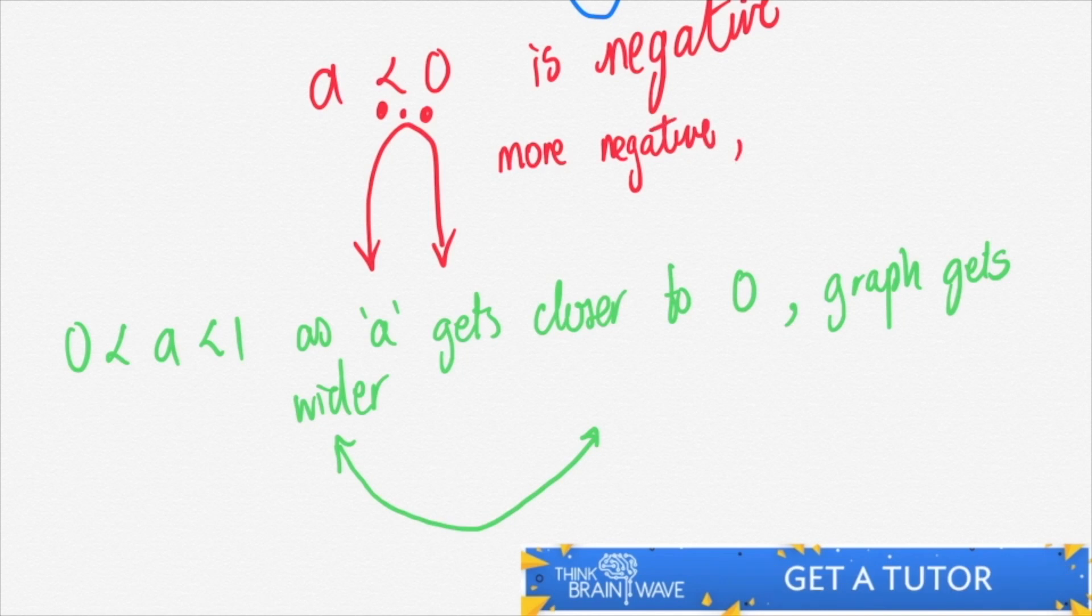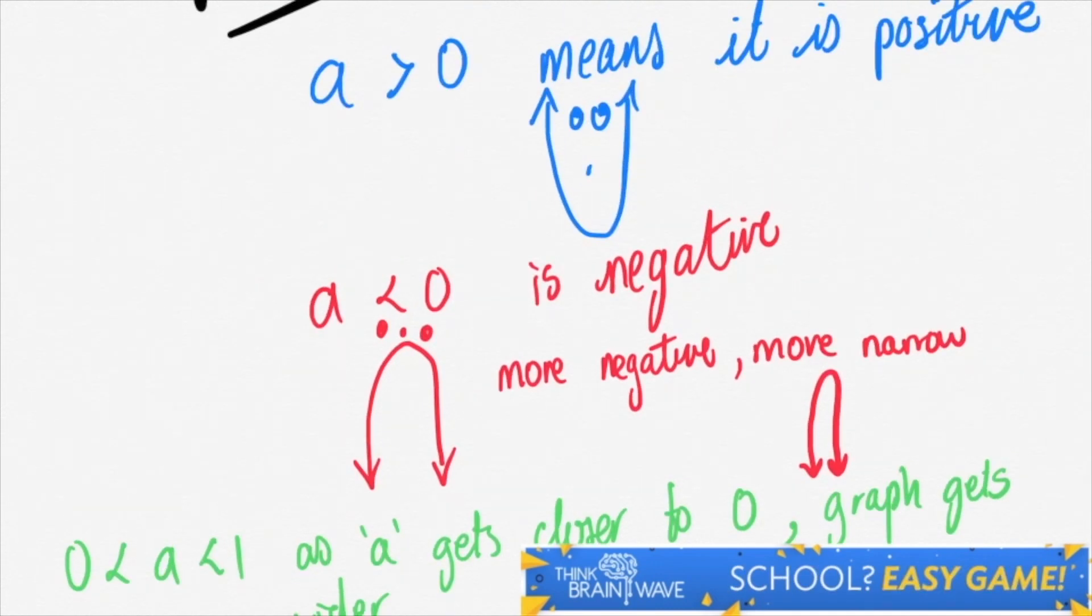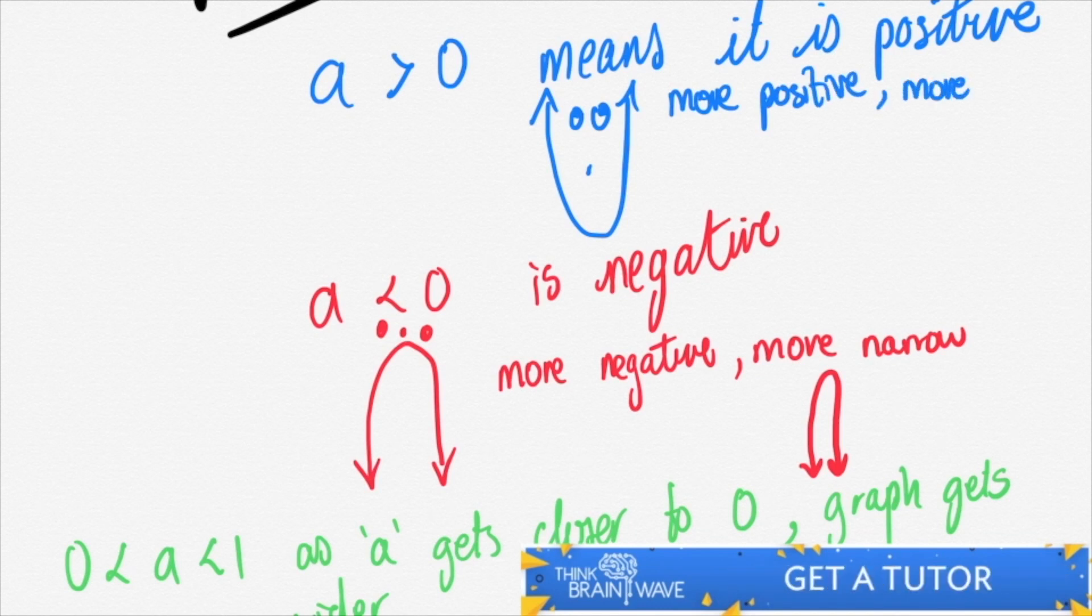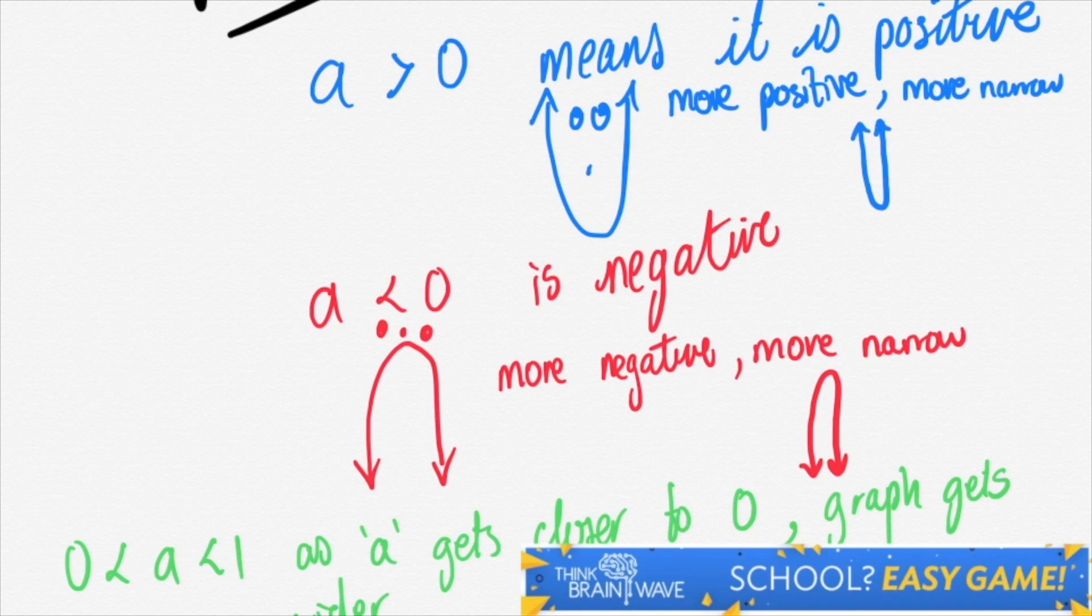More negative means more narrow, as you can see there. And more positive means more narrow, as you can see here.